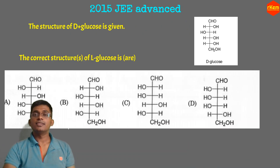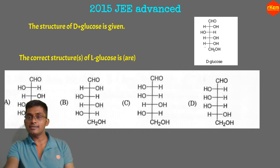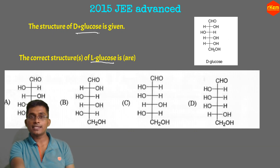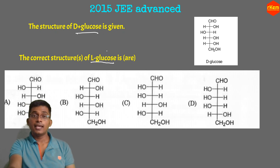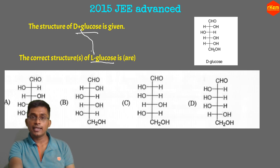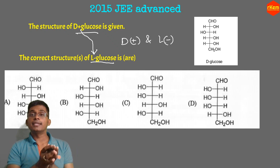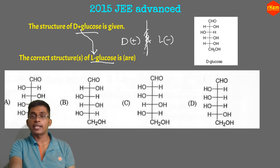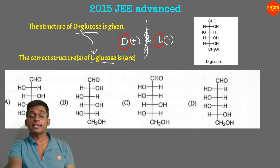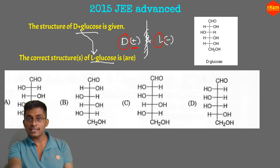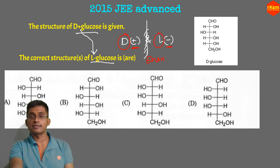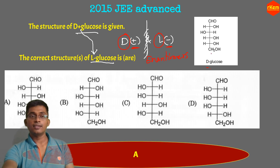Next question from 2015 — very simple. The structure of D(+)-glucose is given; what is L(−)-glucose? D and L refer to relative configuration at the last carbon, not dextro/levo rotation. Don't confuse D/L with +/− optical rotation — it is a tricky question. D(+) and L(−) must be enantiomers — mirror images of each other. Find the enantiomer of D-glucose in the options. The correct answer is option A.